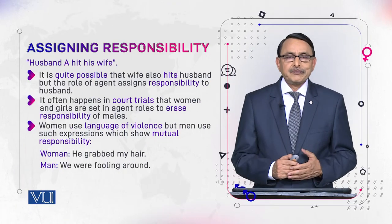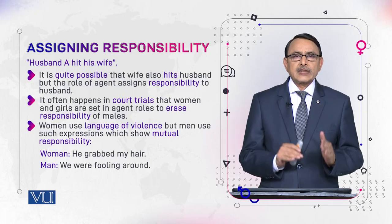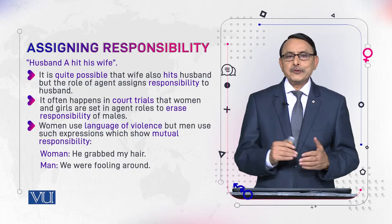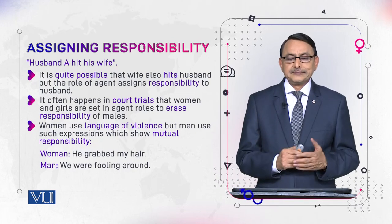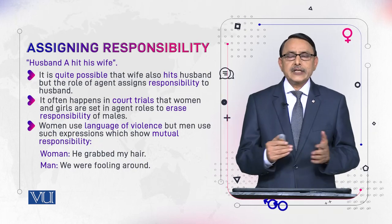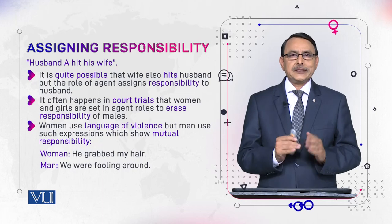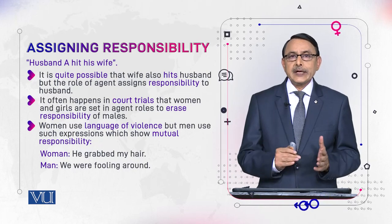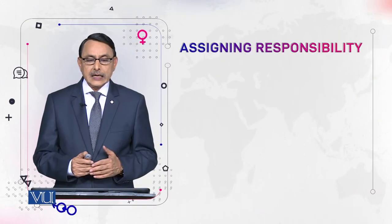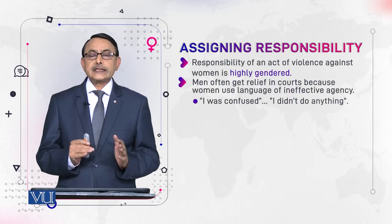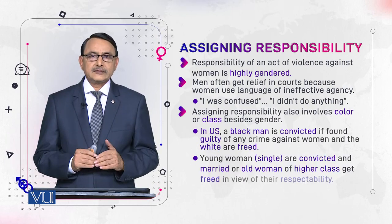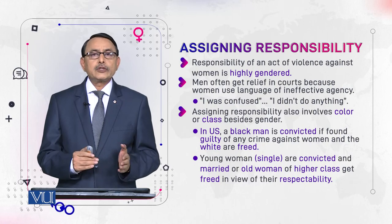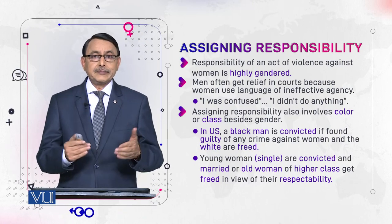In trials, when women talk they use language of violence: 'This person hit me, this person grabbed my hair.' Men, on the other hand, say things like 'We were fooling around, we were just kidding, there is nothing serious in it,' trying to underplay the situation. The woman is being made responsible. The responsibility of an act of violence against women is highly gendered, and men often get relief from courts because women use language of ineffective agency.